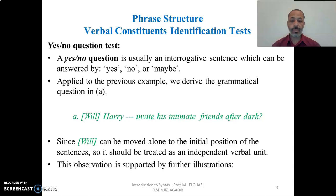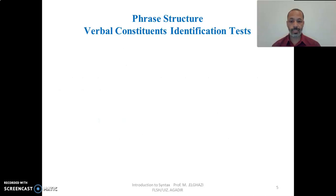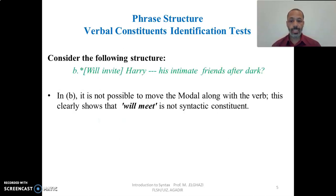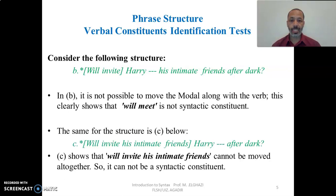Since 'will' can be moved alone to the initial position of the sentence, it should be treated as an independent verbal unit. This observation is supported by further illustrations — 'will' is moved alone to the initial position, which means it is a constituent by itself. Now testing other alternatives: we cannot say 'invite will John his intimate friends after the event?' So it is not possible to move the modal together with the verb. This clearly shows that 'will invite' is not a syntactic constituent.